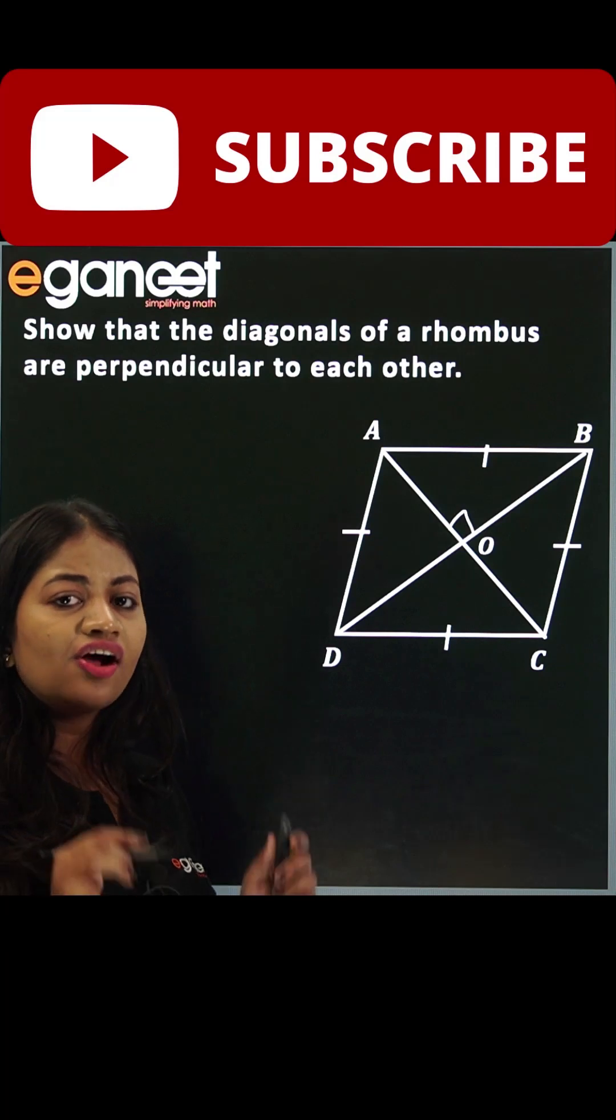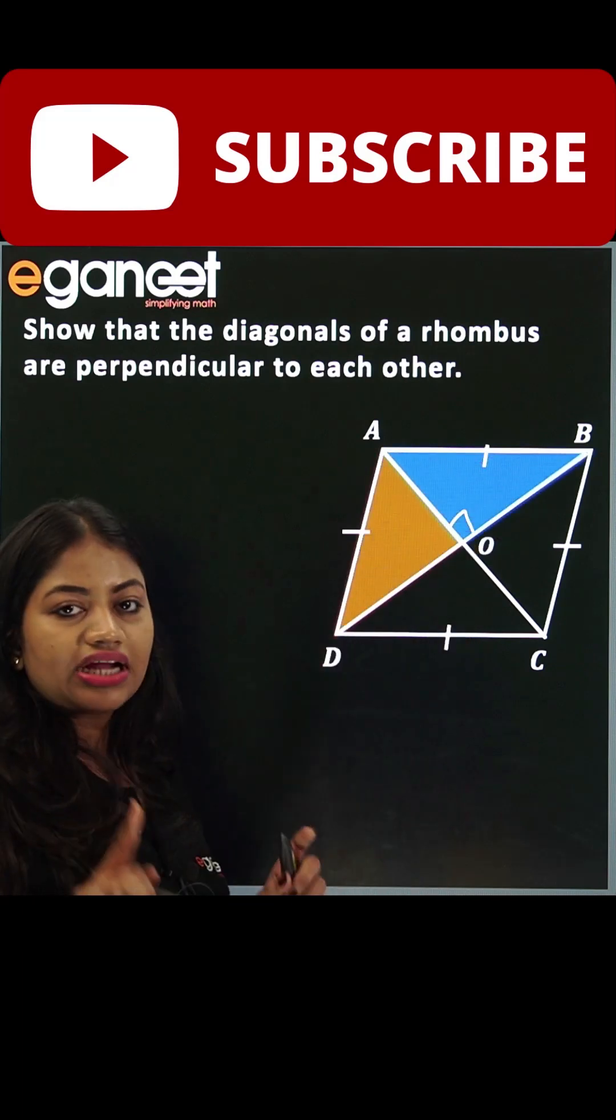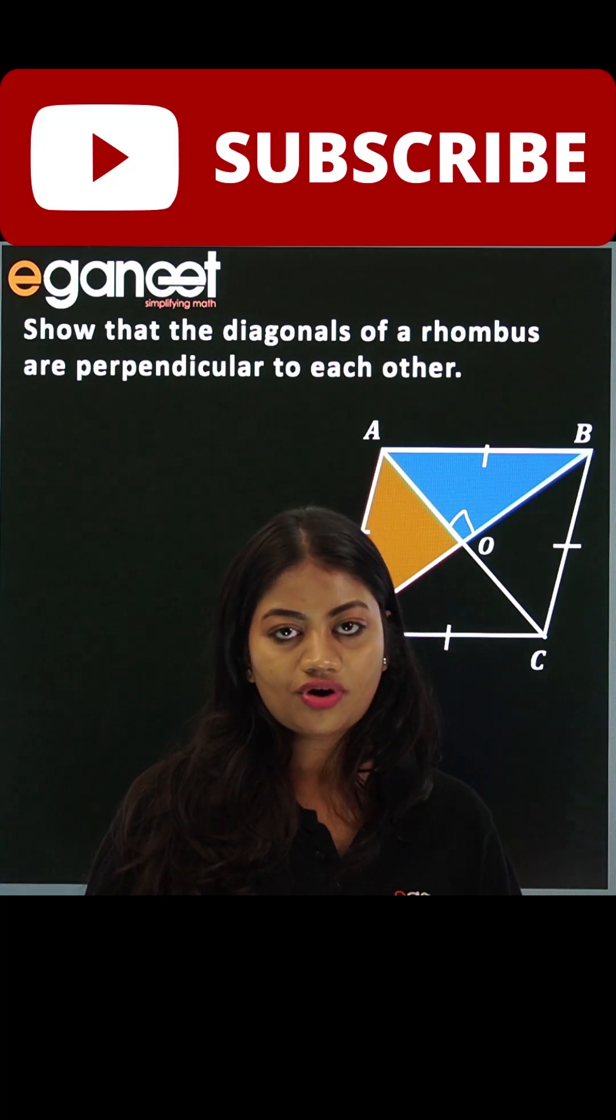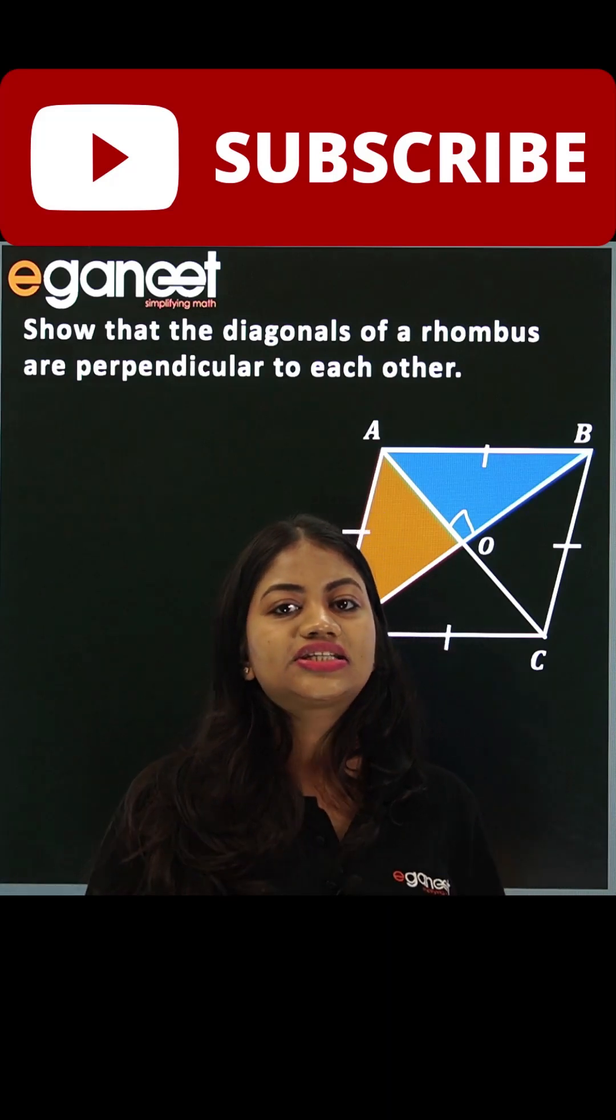For this, I'll prove these two triangles as congruent. Then I can use CPCT, that is Congruent Parts of Congruent Triangles. Now the main thing is in triangles. Let's see, here I have taken triangle AOD and triangle AOB.